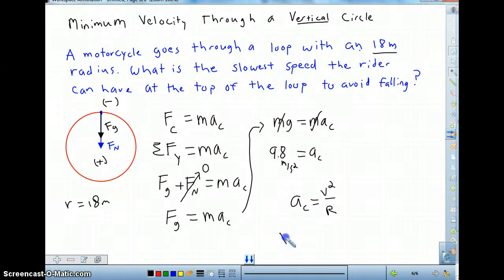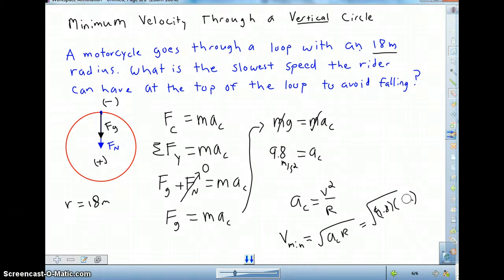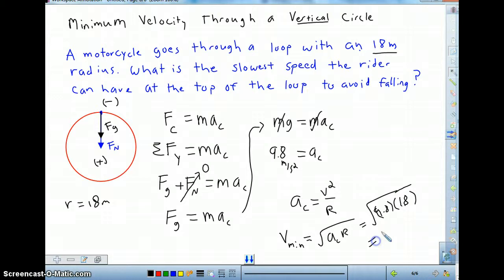So rearranging we'll get the square root of AC times R and that will be the square root of 9.8 multiplied by 18. And that will yield approximately 13.2 meters per second will be the minimum velocity necessary to get through that thing.